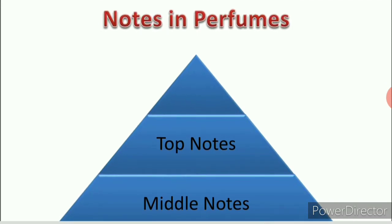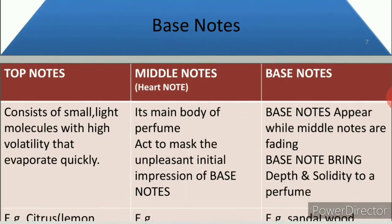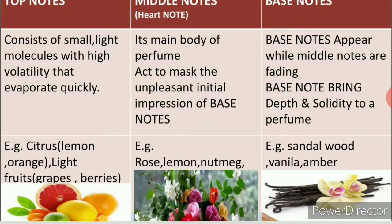There are three kinds of notes in perfumes: top notes, middle notes, and base notes. Top notes consist of small light molecules with high volatility that evaporate quickly. Middle notes, also called heart notes, form the main body of the perfume and act to mask the unpleasant initial impression of base notes. Base notes appear while middle notes are fading and bring depth and solidity to a perfume. Examples of top notes include citrus fruits like lemon and oranges, and light fruits like grapes and berries.